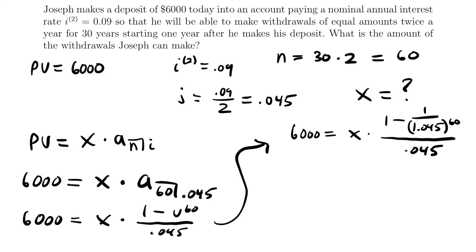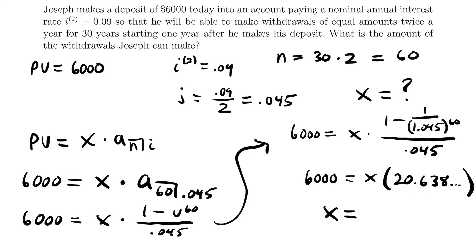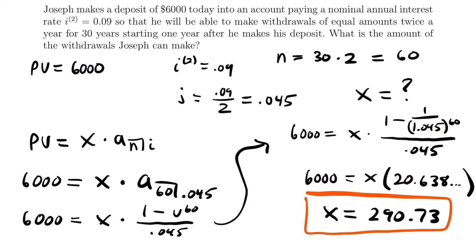Plugging this into the calculator gives 6,000 = X times 20.638. Dividing both sides by that value — remember to save the full decimal in your calculator — X equals $290.73. This is the amount Joseph can withdraw twice a year for 30 years, given a deposit of $6,000 today at this nominal annual interest rate.